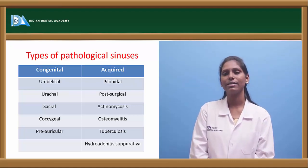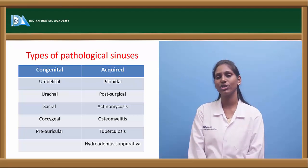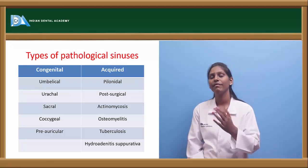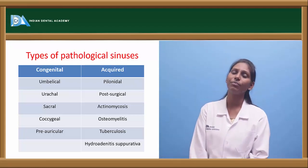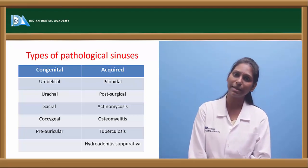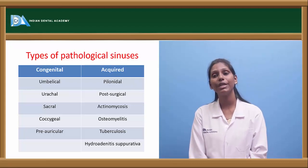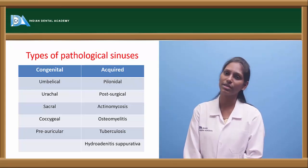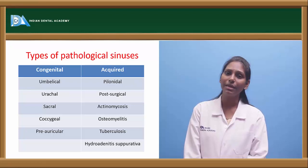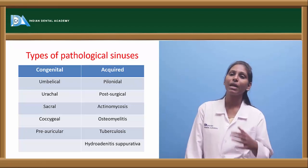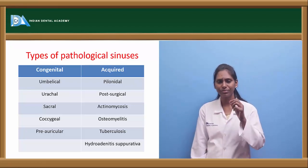Coming to types of pathological sinuses — they are again congenital and acquired. When talking about congenital sinuses, we have umbilical sinus, urachal sinus, sacral sinus, pre-auricular sinus, and coccygeal sinus.